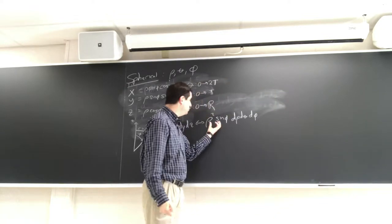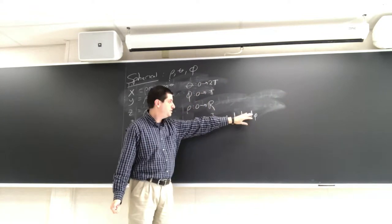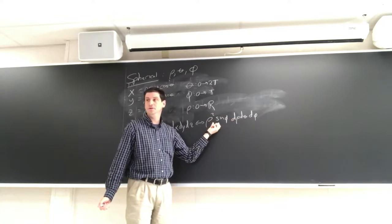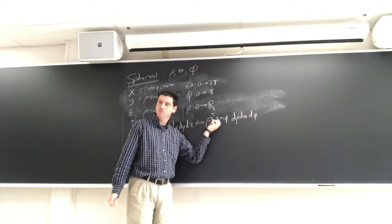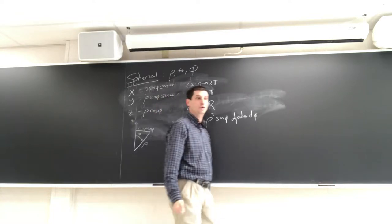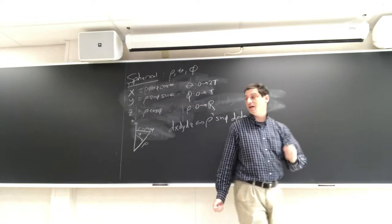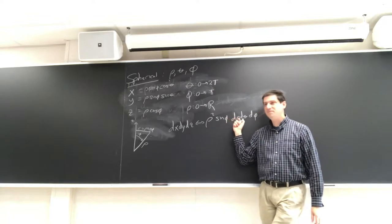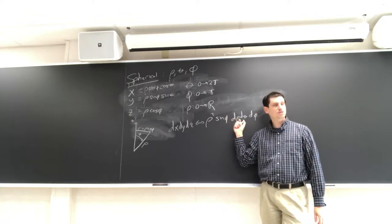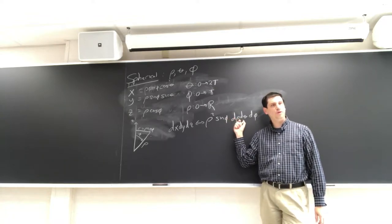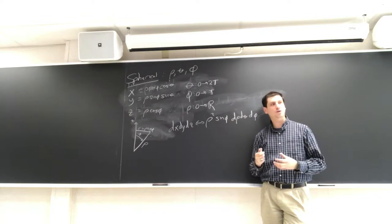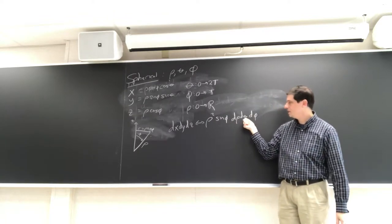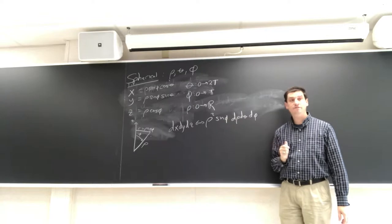The only way the units work — I need units of meters cubed, and dρ has units of meters, so it's got to be ρ squared. That's the easy part. The sine of φ is the much harder part. The fact that it's just dθ — maybe that's similar to polar coordinates, so I can kind of see why. But the sine of φ is hard.